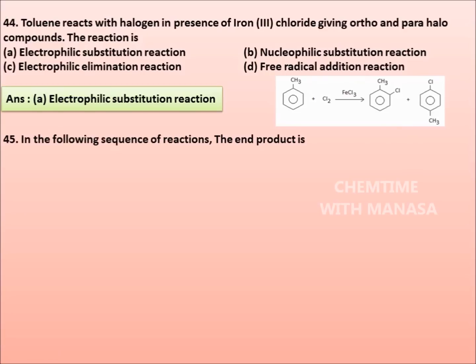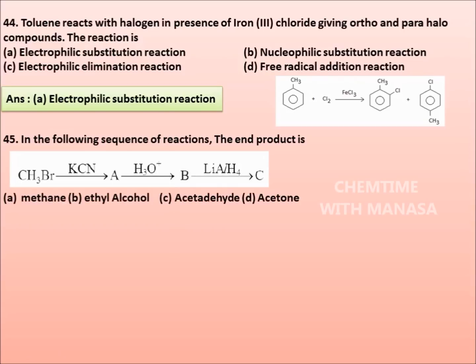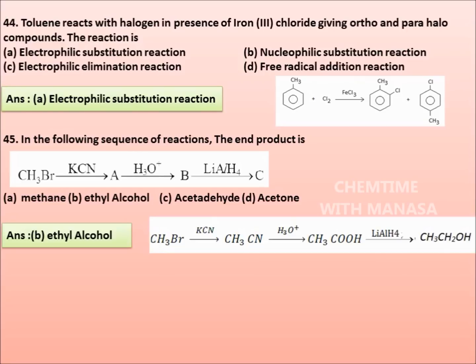Question number 45. In the following sequence of reactions, the end product is: CH₃Br reacts with KCN to get compound A, which on acid hydrolysis gives B, which on reduction in presence of lithium aluminum hydride gives compound C. Here compound C is: methane, ethyl alcohol, acetaldehyde or acetone. Correct answer is option B, ethyl alcohol. The reaction sequence is: CH₃Br reacts with KCN to give CH₃CN, which on acid hydrolysis gives CH₃COOH. This carboxylic acid will reduce to ethyl alcohol in presence of lithium aluminum hydride. So the compound C is CH₃CH₂OH or ethyl alcohol.